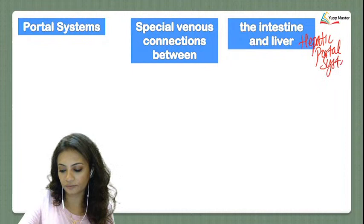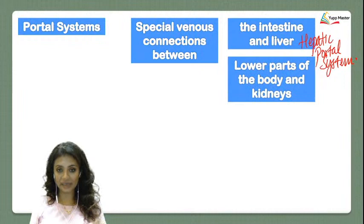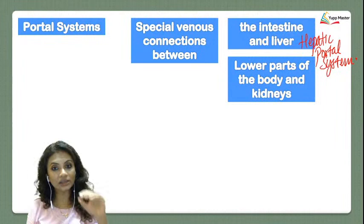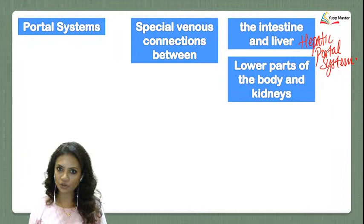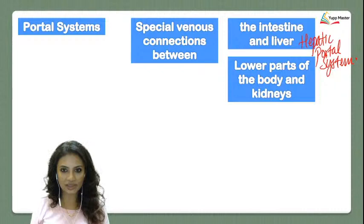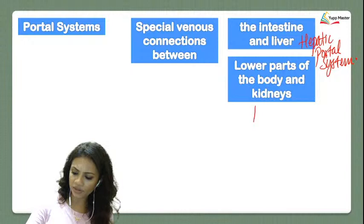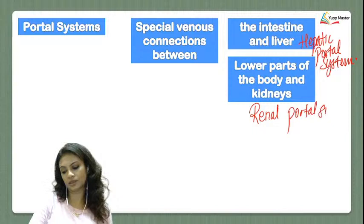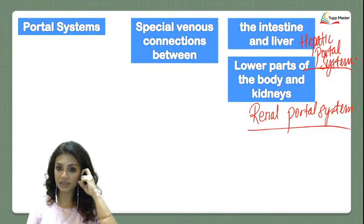Frogs have two types of portal systems. The first is the hepatic portal system — connecting the intestine and the liver, just as in humans. The second is the renal portal system — connecting the lower parts of the body to the kidneys, so that excretory waste material is taken directly to the kidneys to be excreted. So frogs have both a hepatic portal system and a renal portal system.